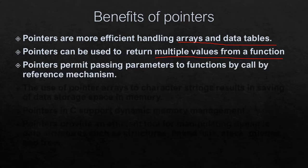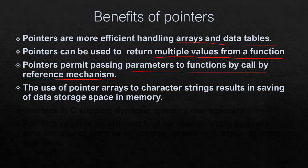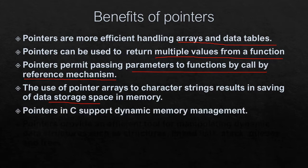Pointers permit passing parameters to a function by the call-by-reference mechanism. The use of pointer arrays to character strings results in saving data storage — memory storage is saved. Pointers in C also support dynamic memory management, allowing memory to be allocated and re-allocated at runtime.